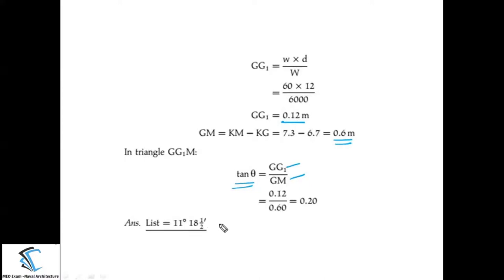If we have more than one cargo, the formula remains the same — whatever the number of cargos, tan θ = GG1 / GM always applies. Please keep this formula in mind.